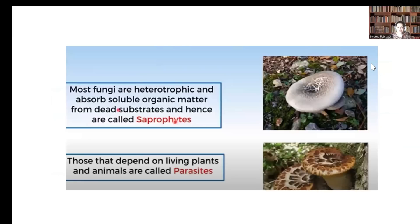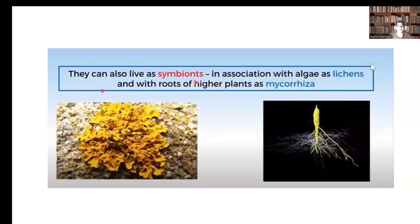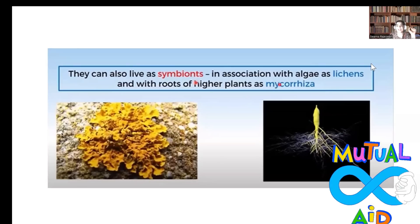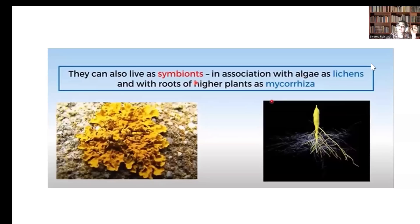Fungi are heterotrophic and absorb organic matter from dead organisms — we call them saprophytes. Some fungi depend on other organisms like plants or animals for food — these are parasites. In some cases, fungi live in a symbiotic relationship with other organisms. If the association is with algae, we call it a lichen, where materials are exchanged mutually. If fungi are associated with higher plants, we call it mycorrhiza.